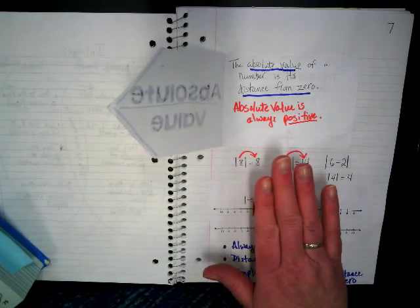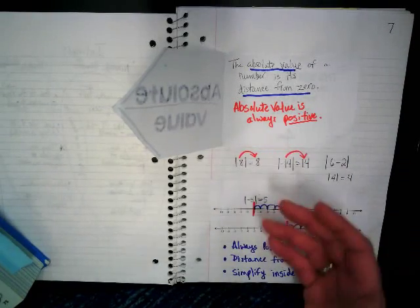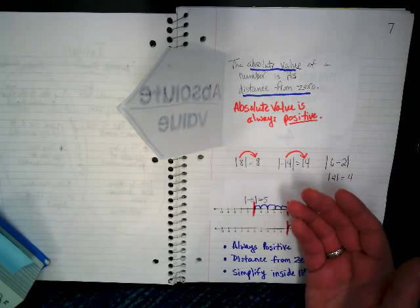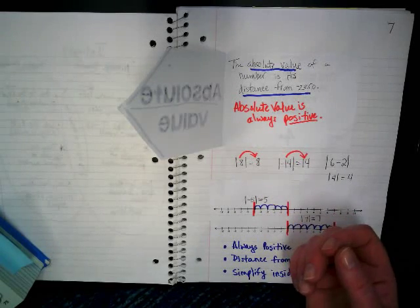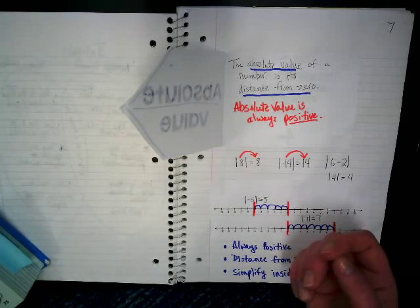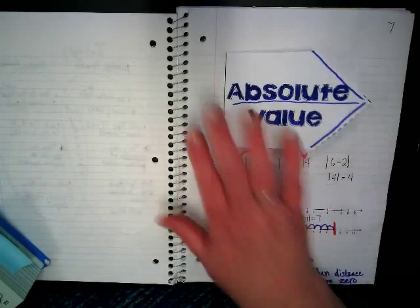Think back to when we were playing the integer game. If you ended up with a negative one and everybody else in the game had two or three, even though it was a smaller number, you were closer to zero and won the game. That whole idea of just distance from zero is what we're looking at here.